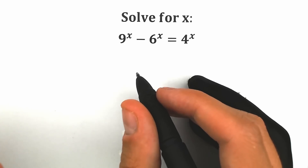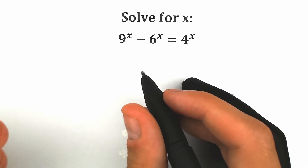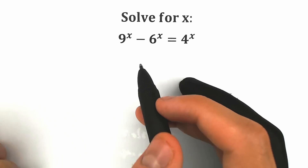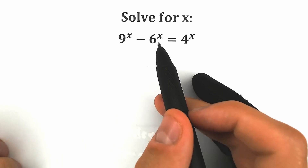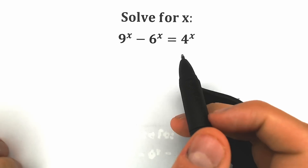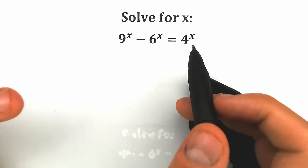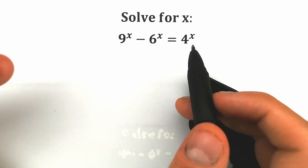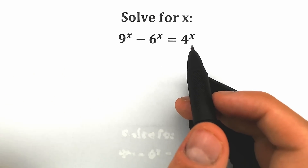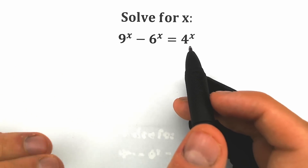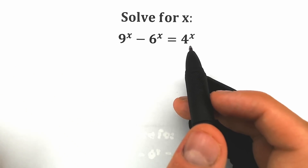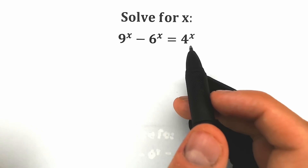Hello my friend, happy to see you here. Today we have a really interesting exponential equation: 9 to the x minus 6 to the x equals 4 to the x, and we need to find x. If you have your answer, you can write your response down in the comment section and we will check your answers at the end of the video. It will be really interesting.